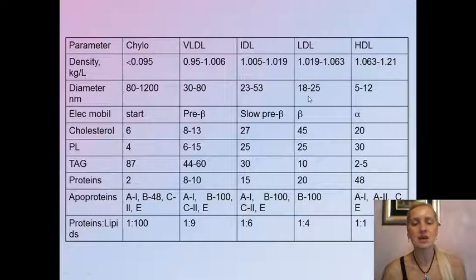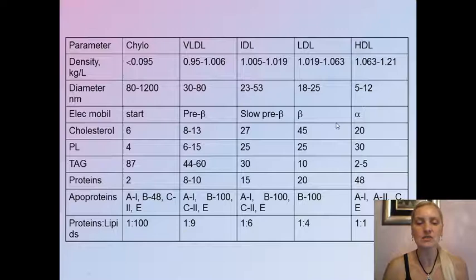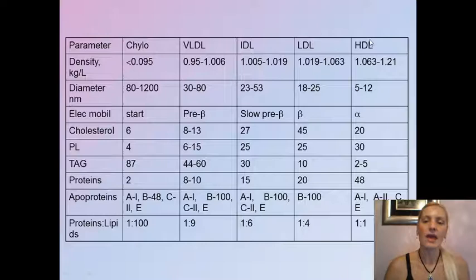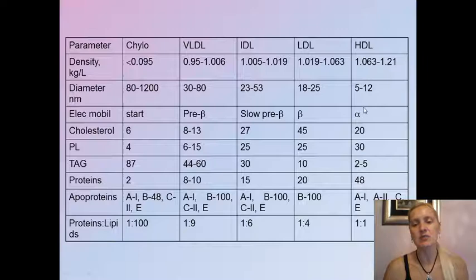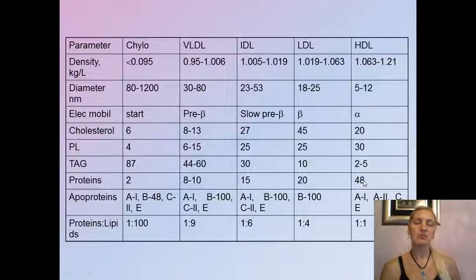LDL particles have increasing density and smaller size, with very high cholesterol content — we consider LDL the major transporter of cholesterol. Their electrophoretic mobility is increased, and they are marked as the beta fraction. HDL particles are the densest and smallest, marked as the alpha fraction due to the highest mobility, containing approximately 50% protein, with a protein-to-lipid ratio of 1:1.